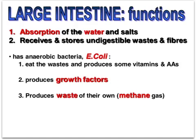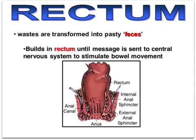Once the large intestine reabsorbs much of the water, the remaining material is called feces. Feces builds up in the rectum, which has stretch receptors connected to the brain via the central nervous system. When enough feces accumulates and the stretch receptors are sufficiently stimulated, the urge to defecate arises. Upon brain stimulation, muscles contract and feces passes through the anal sphincter and out the anus. If food moves through the large intestine too slowly, too much water is absorbed, resulting in hard feces and constipation. That brings us to the end of vodcast one.